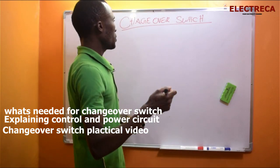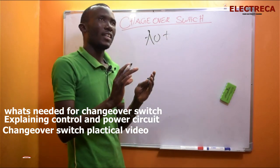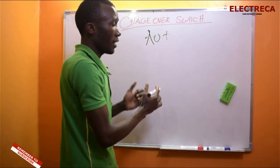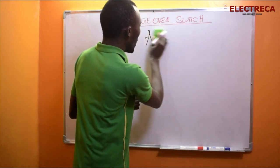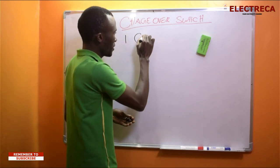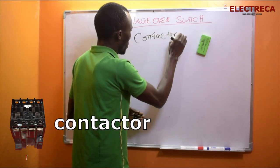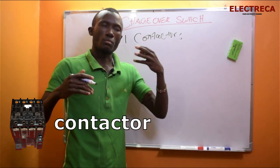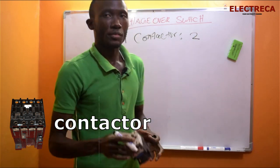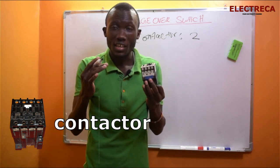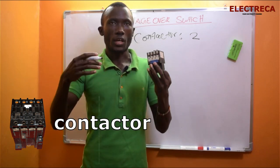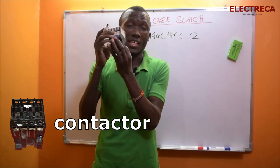Now, since we are going to talk about auto changeover, there are some devices and components that you are going to need for a fully functional automatic changeover. One of those is, of course, conductors. Since you are changing from main to generator, you need two conductors. Any conductor will do — what matters is the current demand for your supply. If you calculate it and know your current demand, that will give you the size of your conductor.